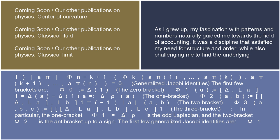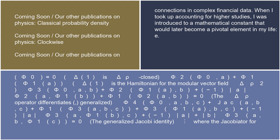The first few generalized Jacobi identities are: phi_1(phi_0) = 0 — delta(1) is delta_rho-closed; phi_2(phi_0, A) + phi_1(phi_1(A)) — delta(1) is the Hamiltonian for the modular vector field delta_rho²; phi_3(phi_0, A, B) + phi_2(phi_1(A), B) + (−1)^|A| phi_2(A, phi_1(B)) + phi_1(phi_2(A,B)) = 0 — the delta_rho operator differentiates the antibracket (generalized).